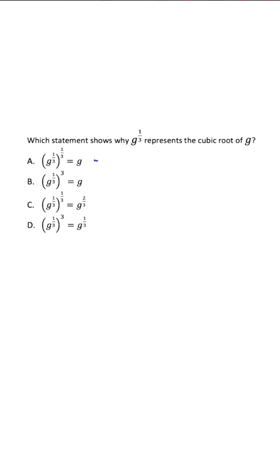So when we look at our first expression, when we simplify by multiplying those exponents, we'll get g to the one over nine. And when we think about this, this is not going to simplify to g.